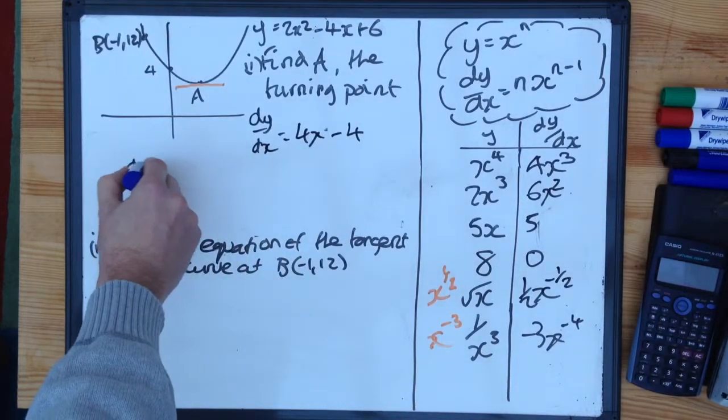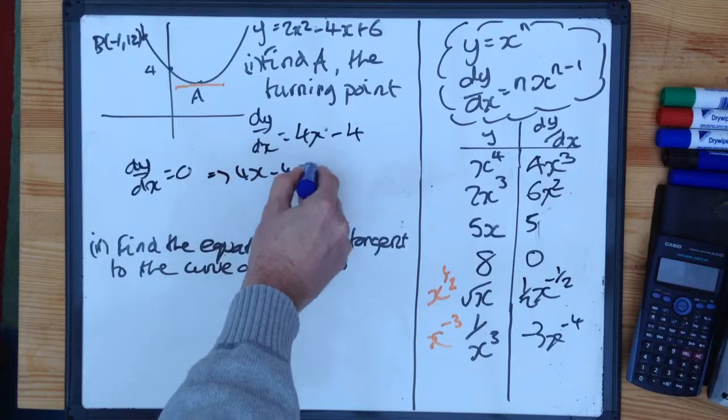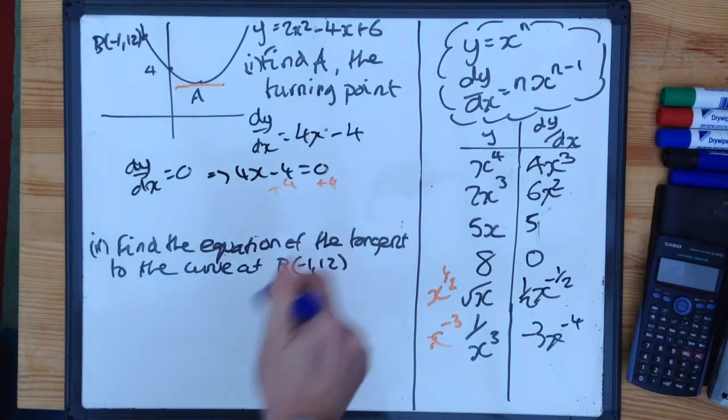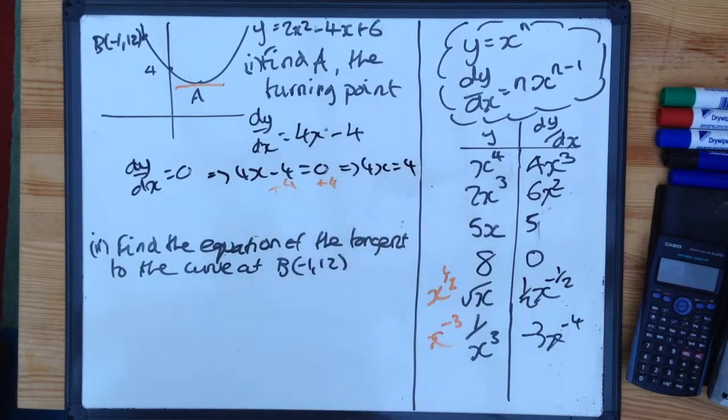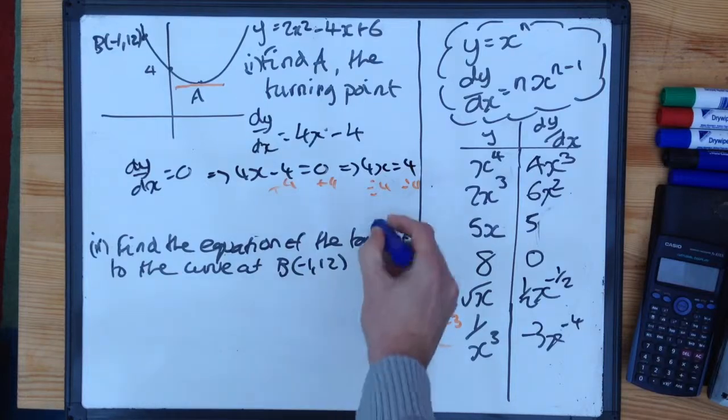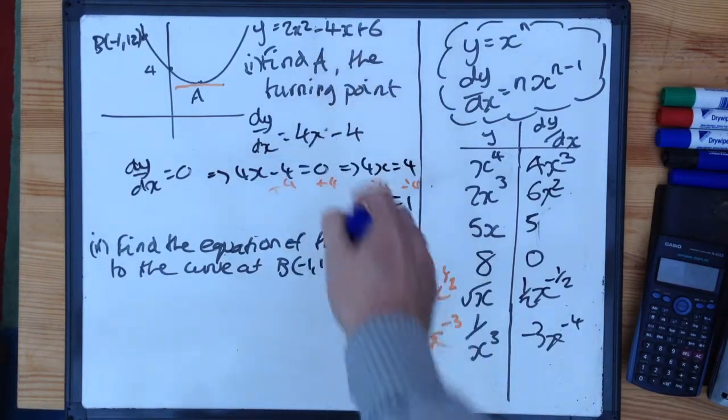At the turning point, dy/dx is nothing. So we make 4x minus 4 equal nothing. Add 4 to both sides gives us 4x is equal to 4. Divide both sides by 4 and we get x is equal to 1.